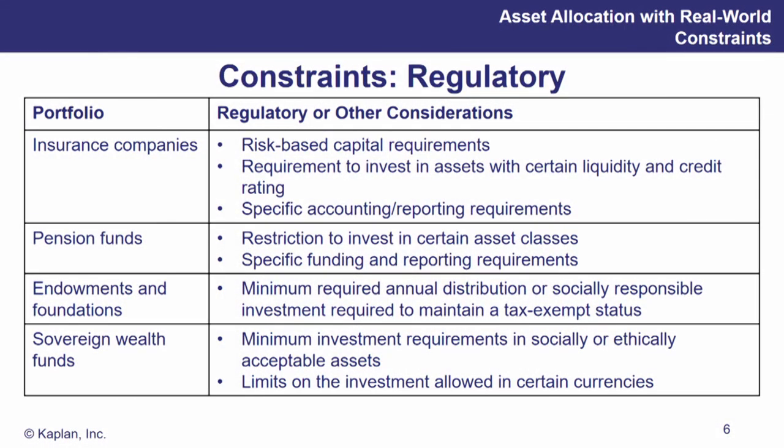Now, another constraint — one that mostly applies to institutions — is regulatory restraints. If we're looking at an insurance company, they may have risk-based capital requirements. Insurance commissioners check that portfolio to make sure it's invested in ways that meet regulatory requirements, not just when the company is on the brink of insolvency but on a regular basis. As their portfolio manager, you need to be cognizant of that and make sure you're staying within those parameters.